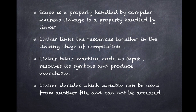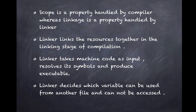Scope is a property handled by the compiler, but linkage is a property handled by the linker. After compilation, the linker links all the object files together and produces an executable. The linker takes all the object files, resolves their symbols, and creates the executable. It decides which particular symbol can be accessed from another object file and which cannot.